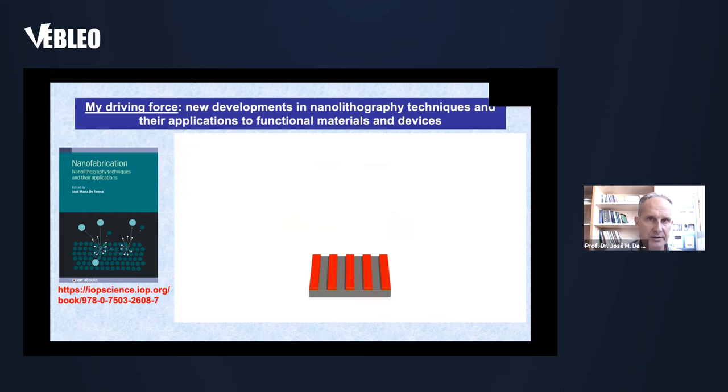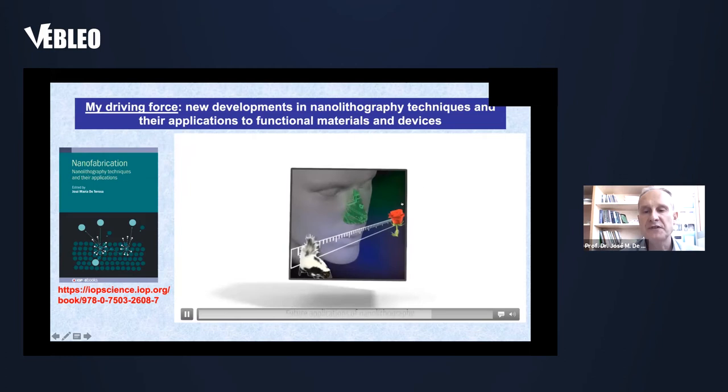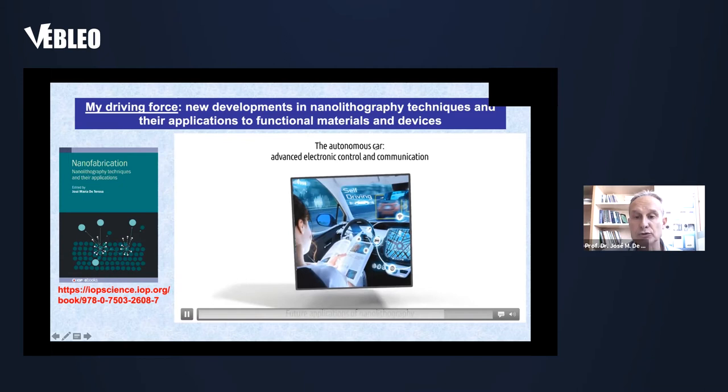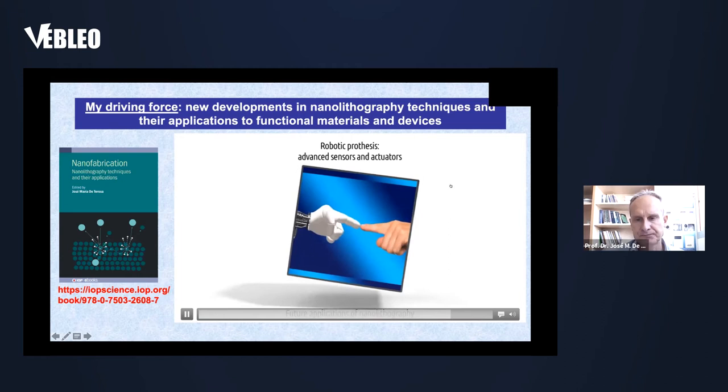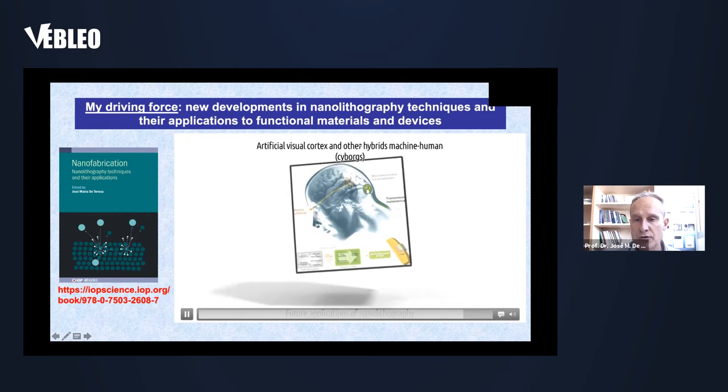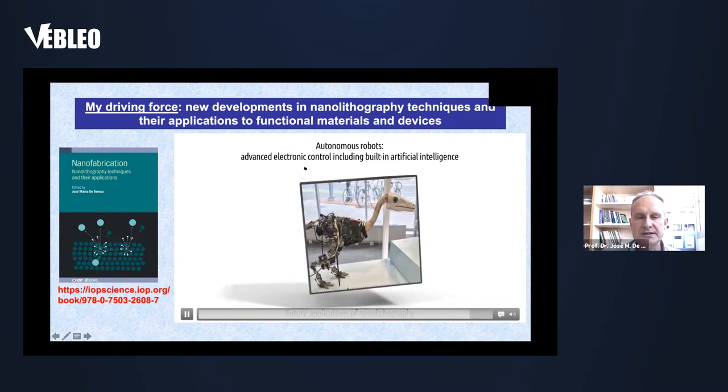What are the future applications of nanolithography? A few examples: the electronic nose based on sensors, the autonomous car, robotic processes requiring advanced sensors, quantum computers needing very small bits, hybrid human-machine systems — so-called cyborgs — and autonomous robots requiring very advanced electronic control.